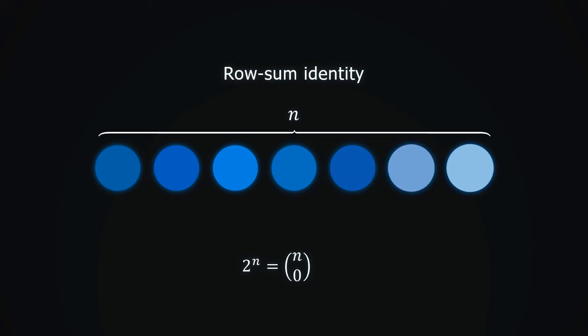So we add it to our sum. We can also take two elements, for which there are n choose 2 ways. We add it to the sum as well. We continue this process until we reach n choose n, which represents taking every object.